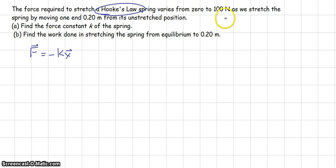So the force required to stretch the Hooke's Law spring varies from 0 to 100 newtons as we stretch the spring by moving one end 0.2 meters from its unstretched position. That means the magnitude of x is 0.20 meters, and the force required is 0 when the stretch is 0 and 100 newtons when the stretch is 0.2 meters. So the force is 100 newtons.